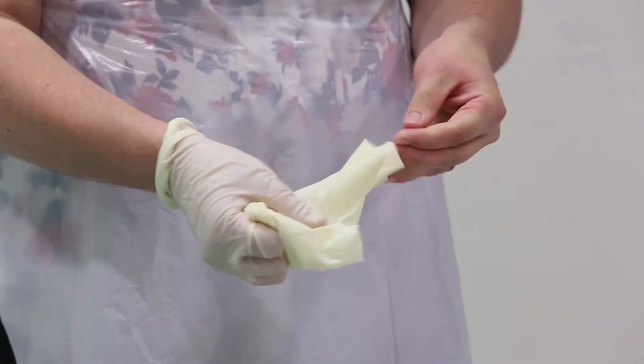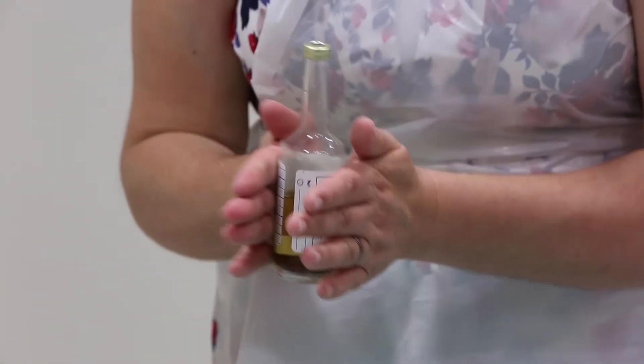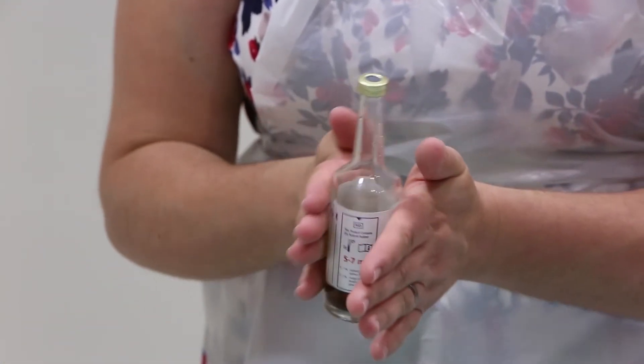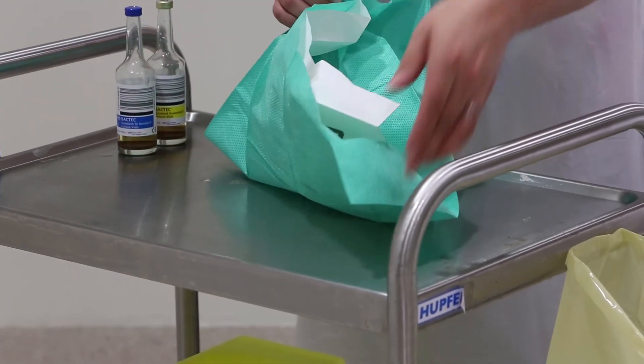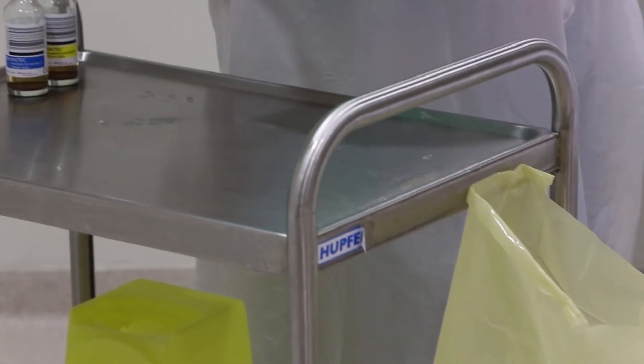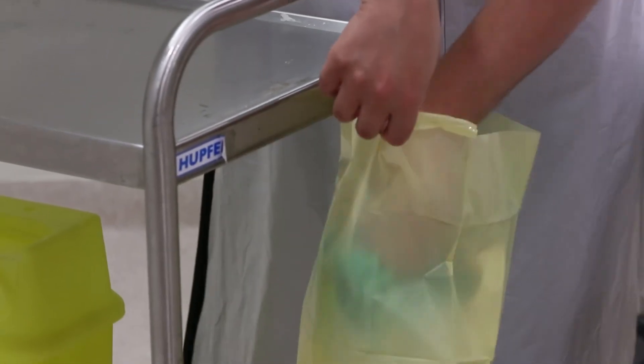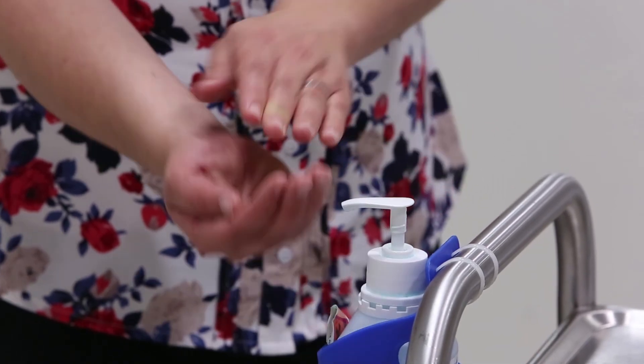Remove your gloves. Gently rotate the blood culture bottles to mix the blood and broth. Do not shake them vigorously. Once ready clear up and dispose of used items using the yellow plastic bag provided. Remove the apron and once again clean your hands with alcohol hand rub.